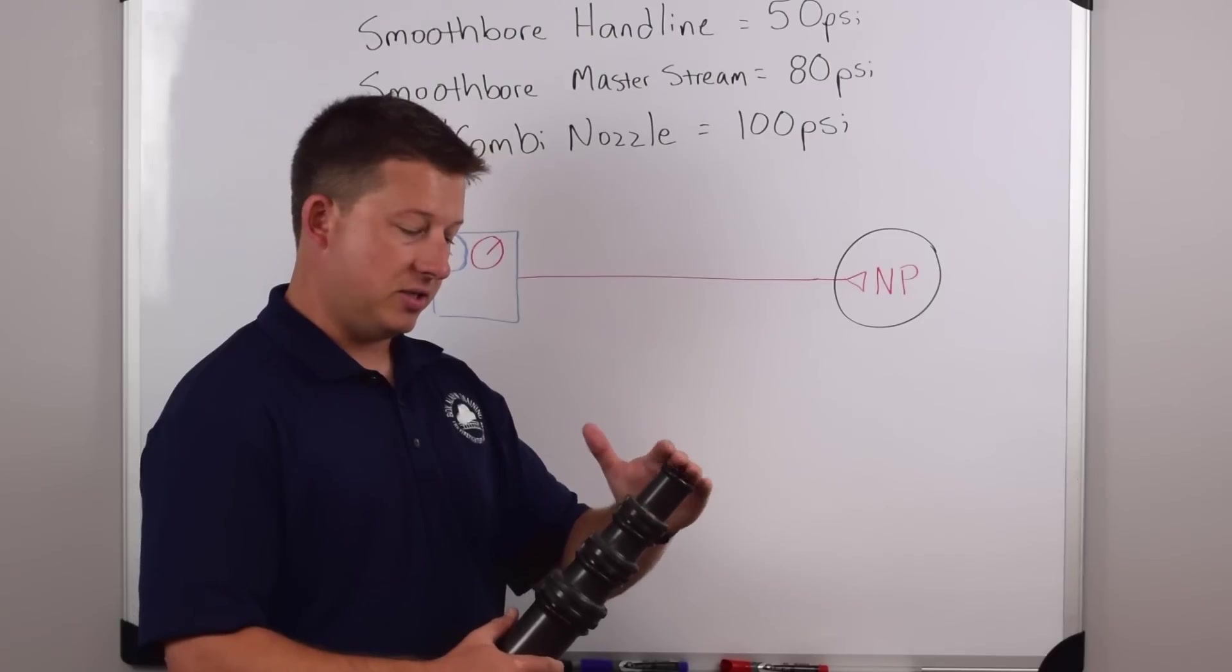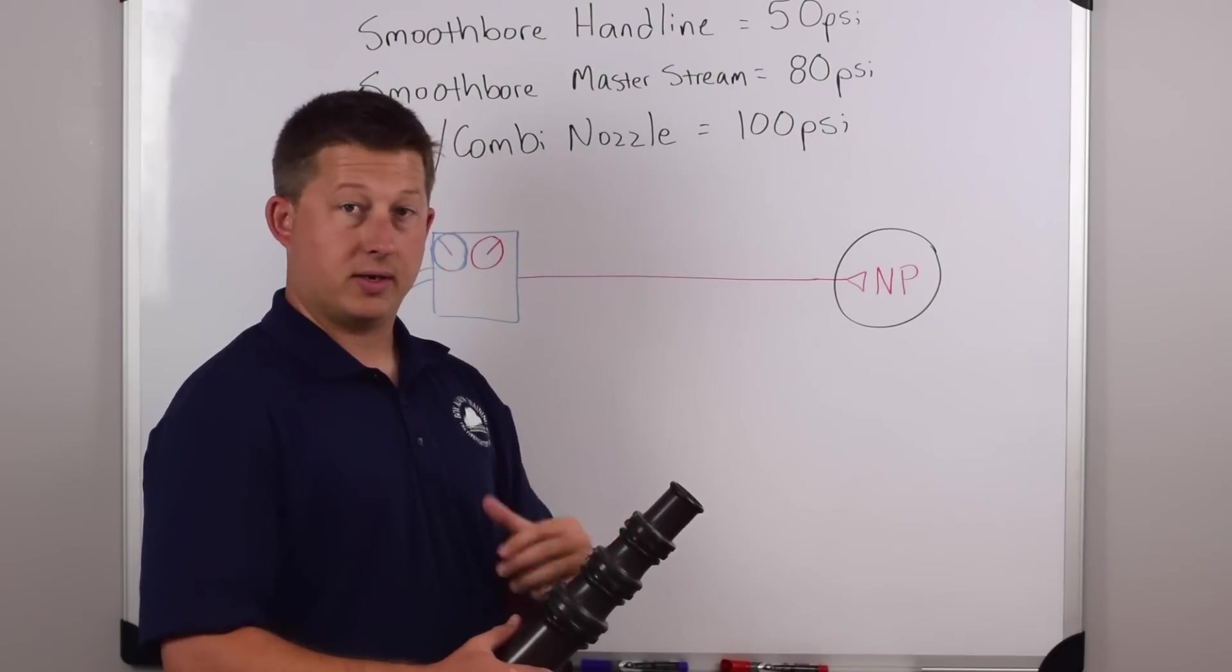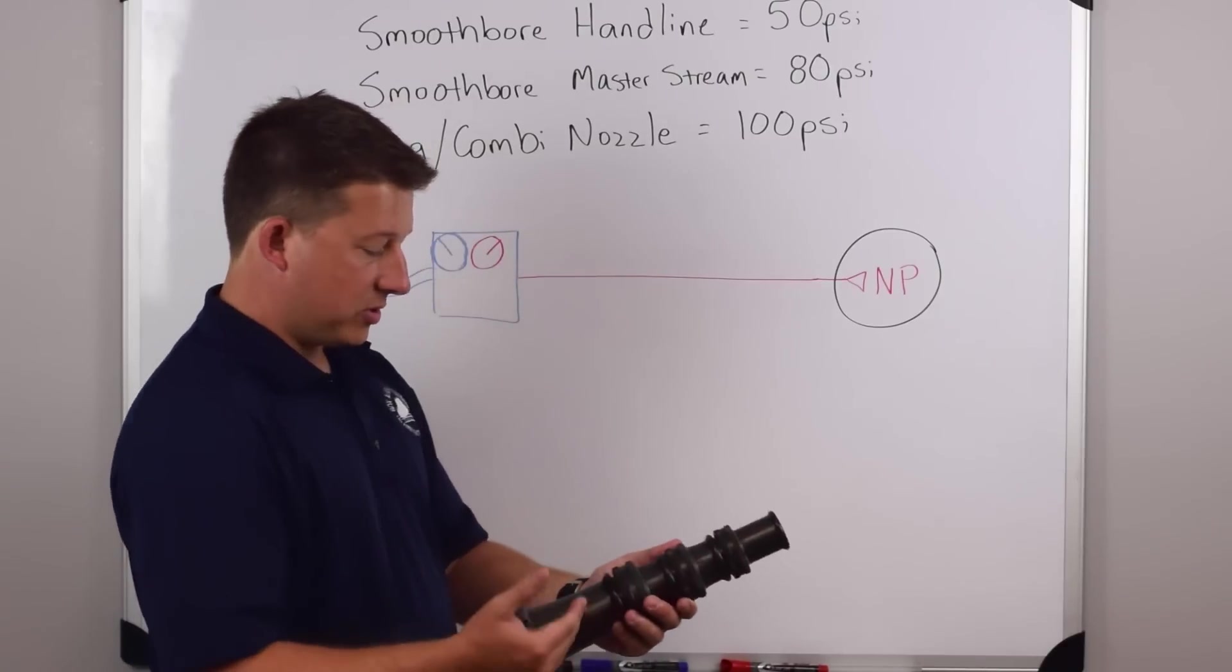When we apply 80 PSI to these different size openings, we're going to get varying amounts of water that come out of that opening because the opening is bigger or smaller.